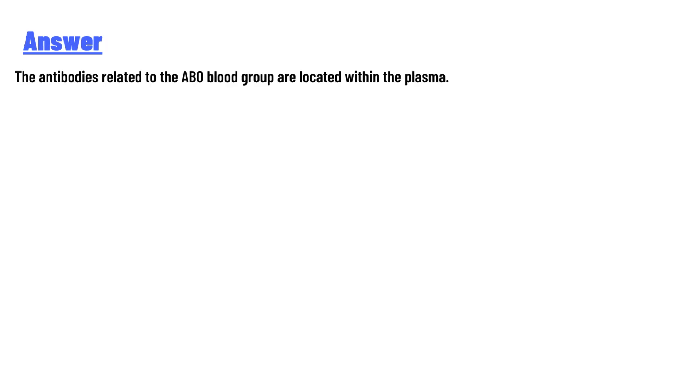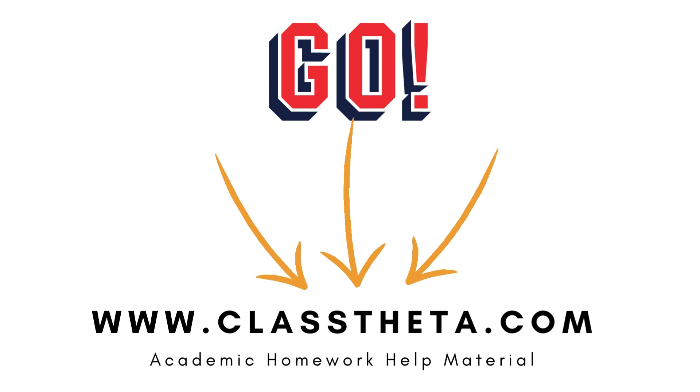The answer: the antibodies related to the ABO blood group are located within the plasma. Thank you for watching the video.